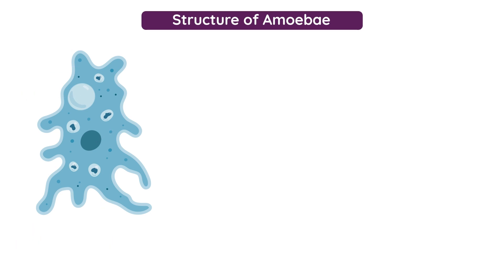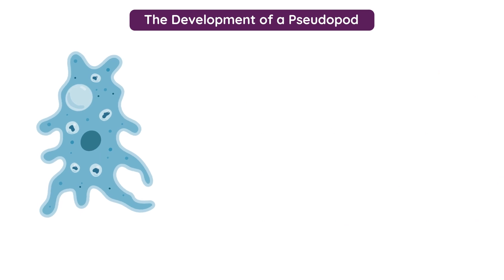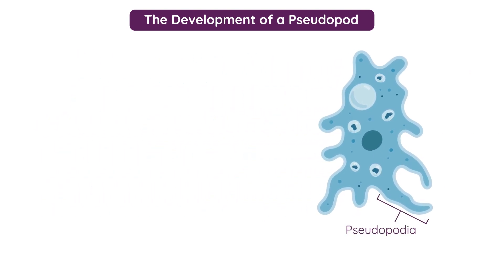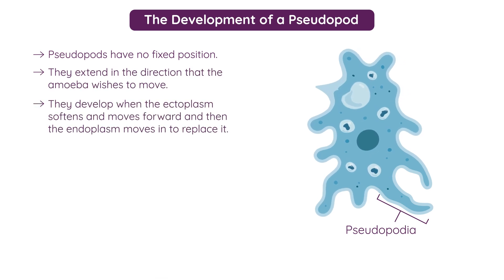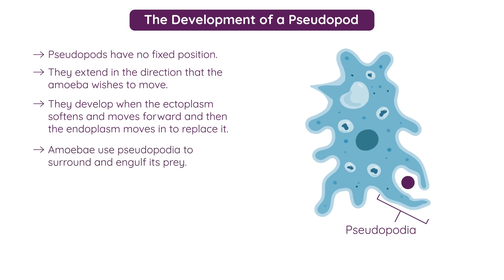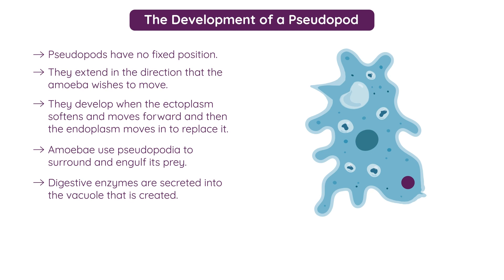Now let's take a look at the development of a pseudopod or false foot. Pseudopods are referred to as false feet as they are produced at any point on the body of the amoeba, but they have no fixed position. Pseudopodia extend in the direction that amoeba wishes to move, and they develop when the ectoplasm softens and moves forward and then the endoplasm moves in to replace it. Amoeba uses pseudopodia to surround and engulf its prey, secreting digestive enzymes into the vacuole that is created. Food can then be stored within this vacuole, so it is called a food vacuole.